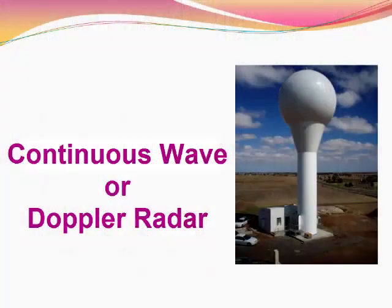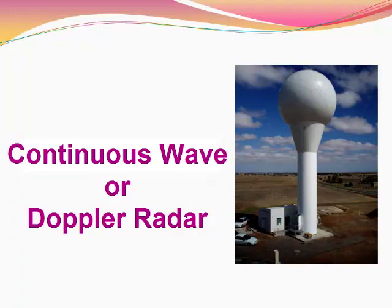we are going to discuss a new type of radar called Continuous Wave Radar or Doppler Radar. Just as we see cars moving with petrol as well as diesel, radars also are of two types. One is a pulsed radar and the other one is a CW radar. In the cars, the main purpose is served by both types of fuels, but the cars will have a different structure depending on the fuel used, and both the types have their own advantages and disadvantages.